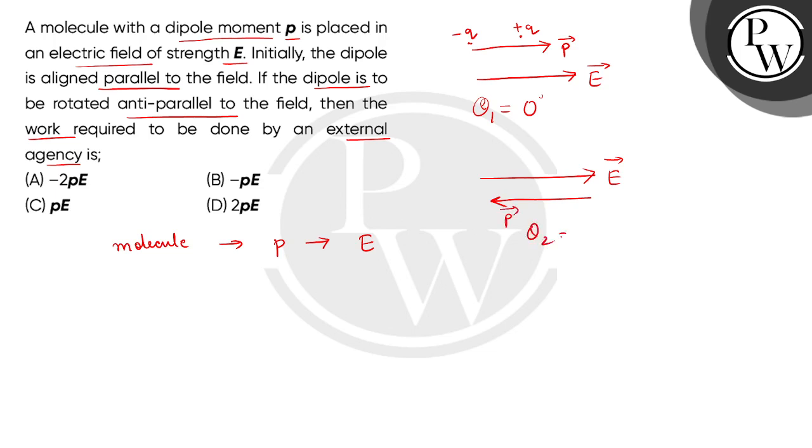such that it becomes anti-parallel to the electric field. It means अब हमारे पास theta 2 की value आ चुकी है 180 degree. So, हमें find करना है कि work done का expression क्या होता.